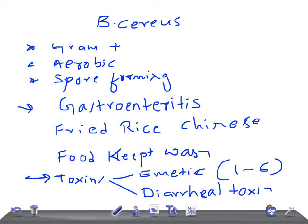If you want to differentiate whether the vomiting is due to Staph aureus or Bacillus cereus, look at the important feature in the case history: fried rice. That's the key differentiating clue.